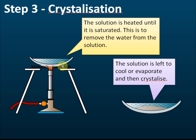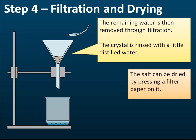In step three — crystallization — we heat the solution to remove water until the solution becomes saturated. We cannot heat it until it is completely dry, because if we do, the salt may be decomposed by heat. We only heat it until it is saturated, then leave it to cool down, at which point the salt will crystallize and form solid crystals in the solution.